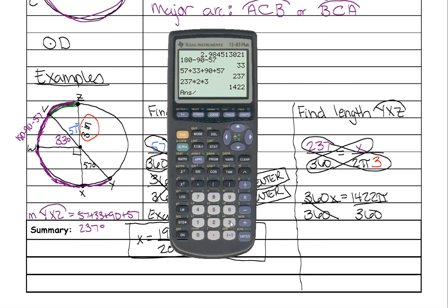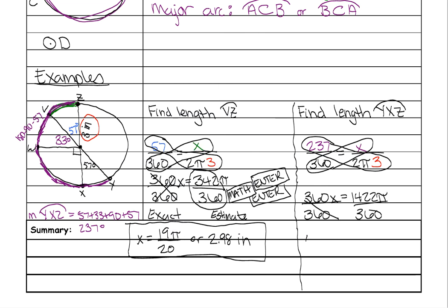And then we need to put this in our calculator. So 1422 divided by 360. You could go ahead and math enter now if you want to, and it would give it to you immediately. So 79π over 20.